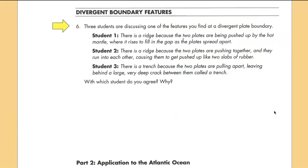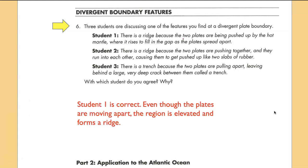Three students are discussing one of the features. Which student do you agree with? Well student one is correct. Even though the plates are moving apart, the region is elevated and it forms a ridge. The two plates are not pushing together—that would be a convergent boundary. There's no trench. Trenches are at convergent boundaries. There is a very deep crack that's not shown on the scale of this figure, and that's called a rift valley.